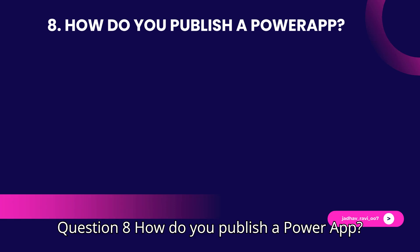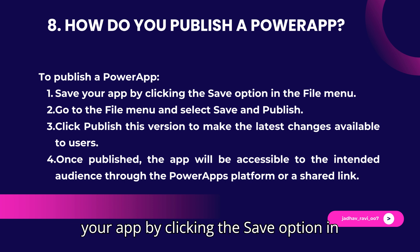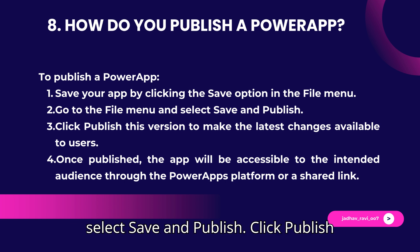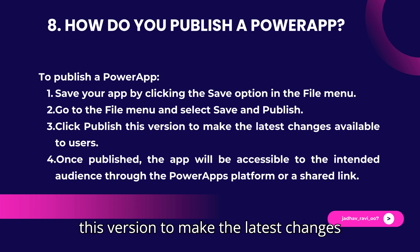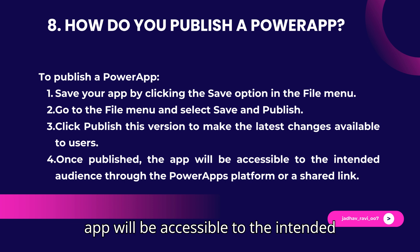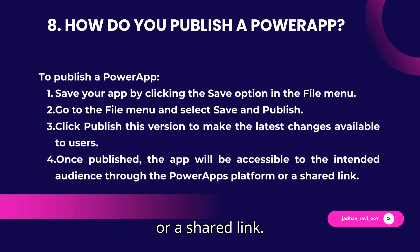Question 8: How do you publish a PowerApp? Answer: To publish a PowerApp, save your app by clicking the Save option in the File menu. Go to the File menu and select Save and Publish. Click Publish this version to make the latest changes available to users. Once published, the app will be accessible to the intended audience through the PowerApps platform or a shared link.